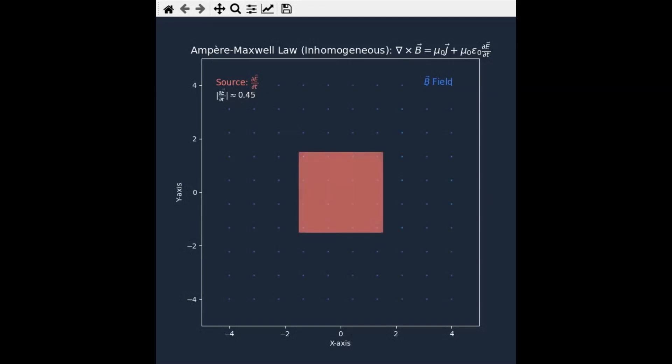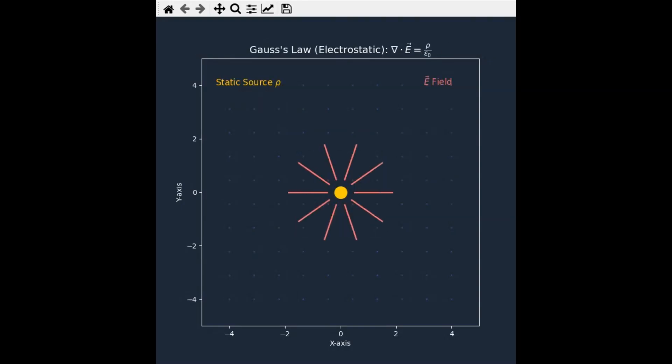A static charge gives you an electric field, with lines radiating out from it. That's Gauss's law. And if you have a current, or even just a changing electric field, that creates a swirling, circulating magnetic field.